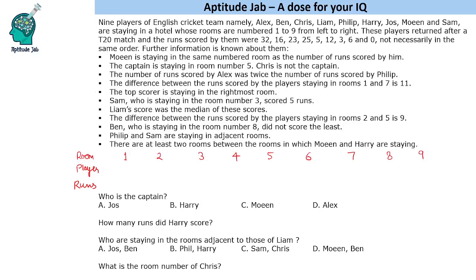The first clue says Moeen is staying in the same numbered room as the number of runs scored by him. This could be 3, 5, or 6 — so let us put this statement on hold and come to it later. Next, the captain is staying in room number 5, and it is not Chris, so any other person could be the captain. The number of runs scored by Alex was twice the number scored by Philip. So we could have 32 and 16, or 12 and 6, or 6 and 3 — too many possibilities as of now. Instead of working on these conditions, we must seek information that can be directly placed without making cases.